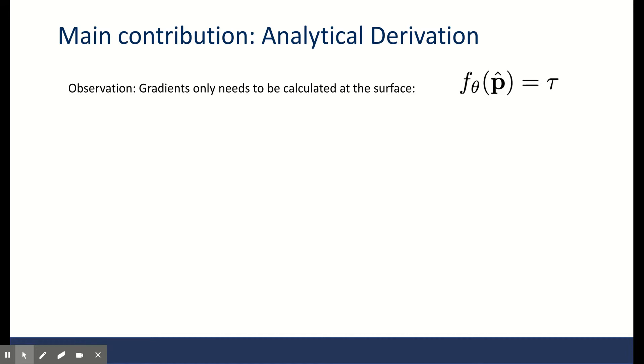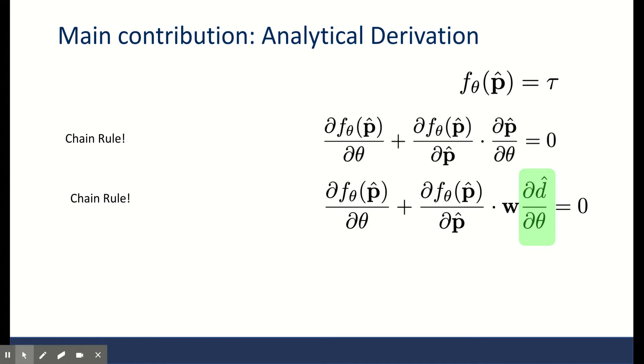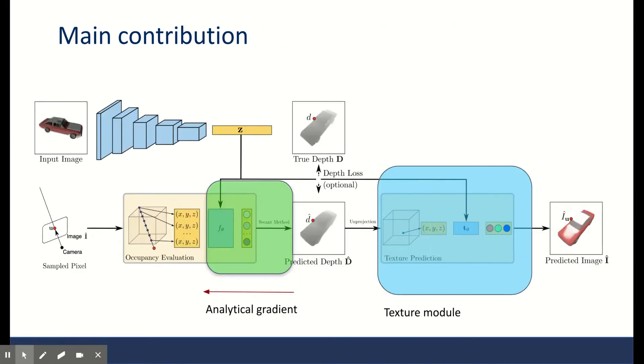So if we take the gradient from both sides of these equations, F_theta of p equals tau, since the right side is constant, it would become zero. Now with a little application of chain rule, we get an equation in the bottom which involves our desired gradient of depth with respect to theta. Therefore, we can arrive at an analytical derivation for this tricky gradient as shown here. So that's about it. We now have a full model from image to image that we can backpropagate all the way through, and we found an analytical gradient to skip the iteration and argmin operations. The main contributions in this work in general is the analytical gradient and the texture module.